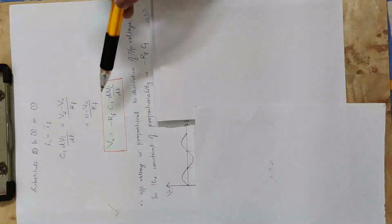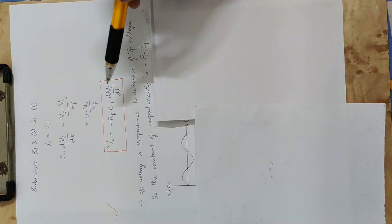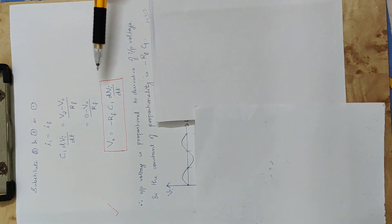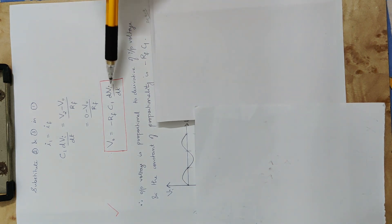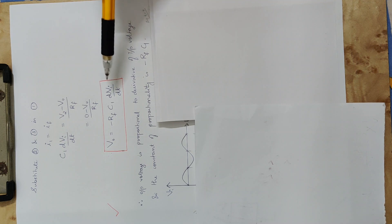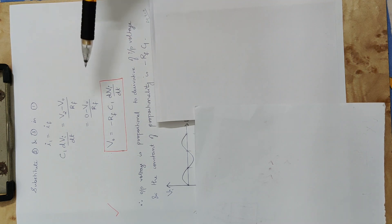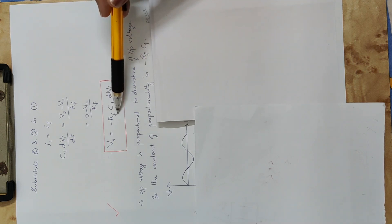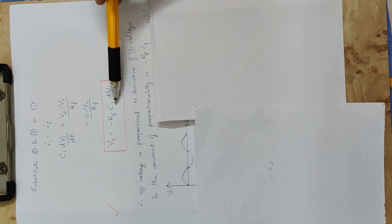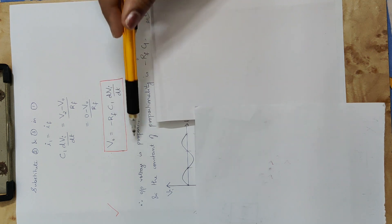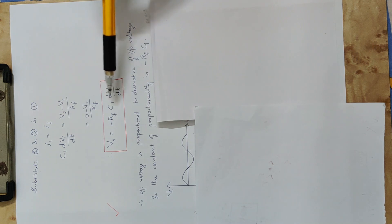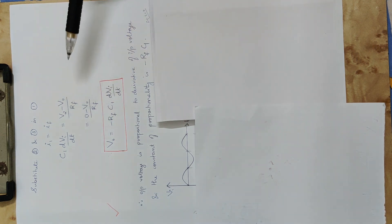Next we have this equation we have derived. That is the differentiator equation. Vo is equal to minus Rf into C1 into dVi by dt. We use the resistance in feedback and input is divided by capacitor. Now the output voltage is proportional to the derivative of input. This is the differentiator.